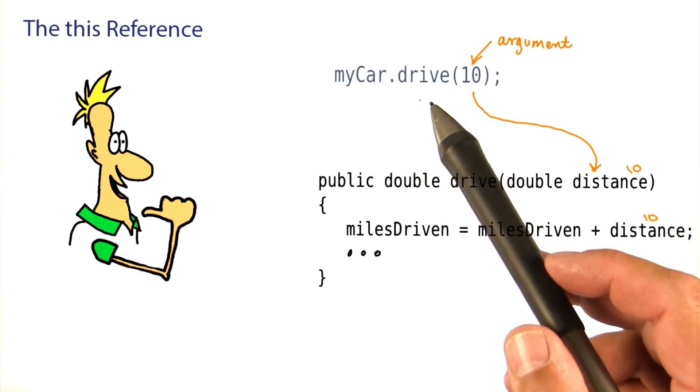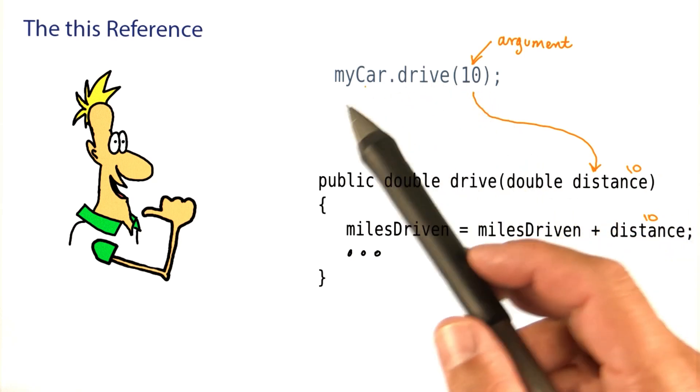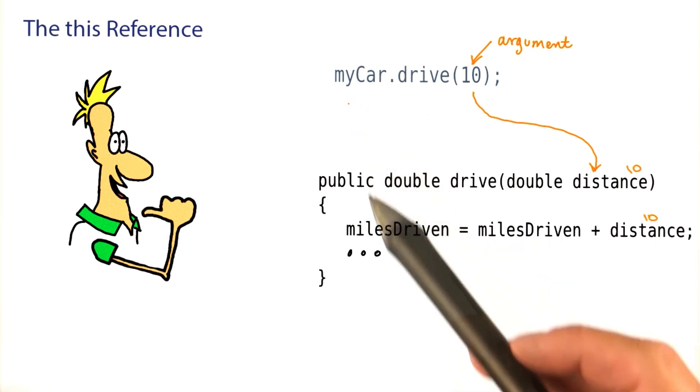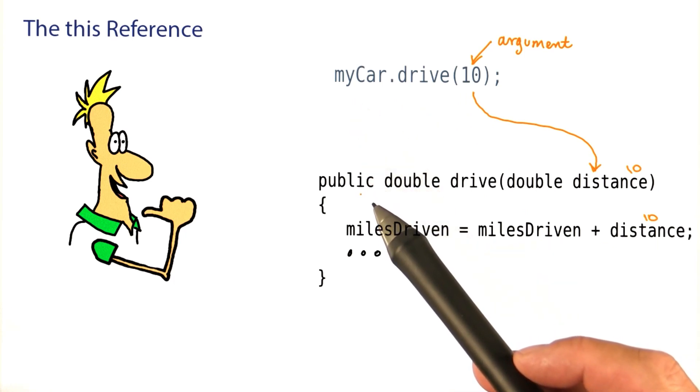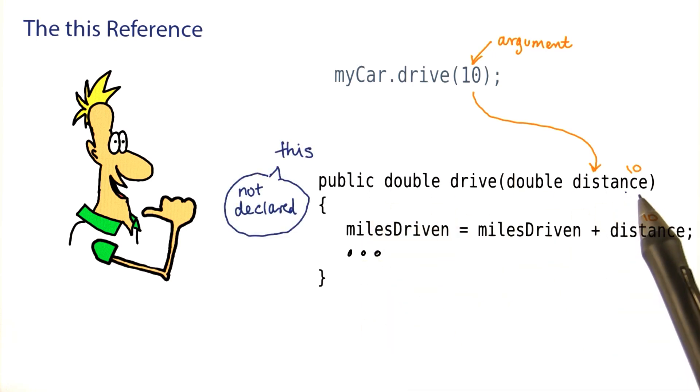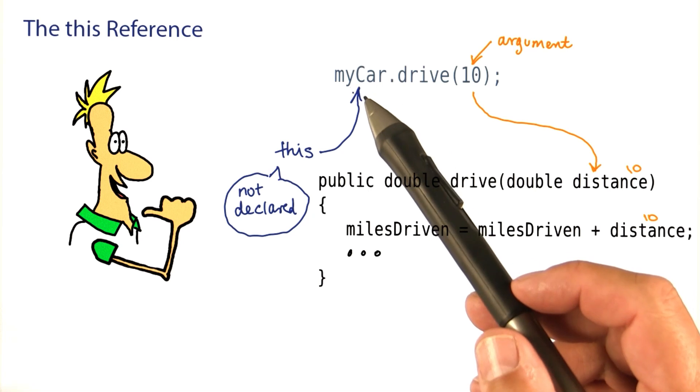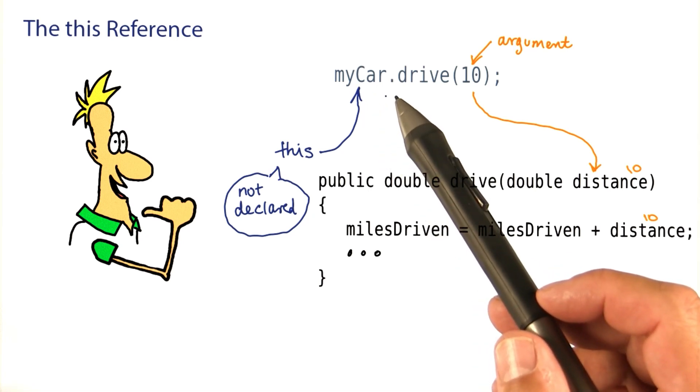Now when you look at this call, it really has two ingredients, the number 10, but also the particular car. And every method in Java has a secret parameter called this. That's not actually declared in the method, but in any call, it references the object to the left of the dot.